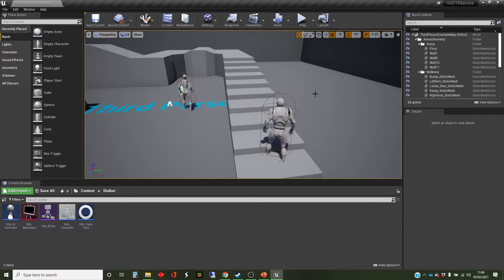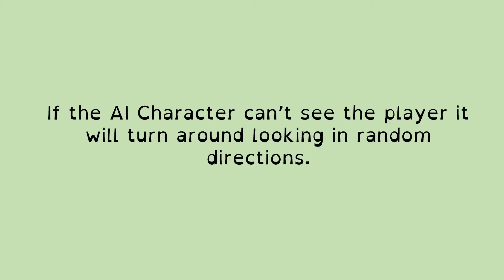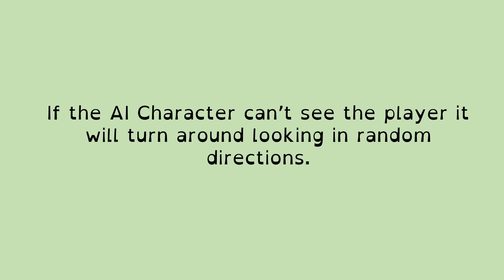Let's refresh our memories as to what we're trying to achieve with our rolling example. The AI character is going to stand on the spot, and if it can't see the player, it'll keep turning around, looking in random directions. So every few seconds, it will turn and face in a different direction, looking for the player.